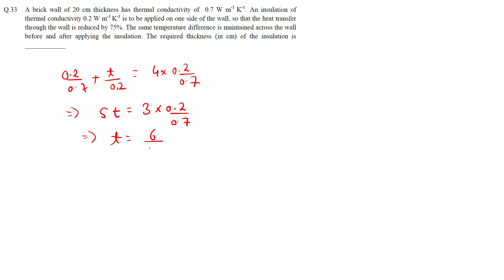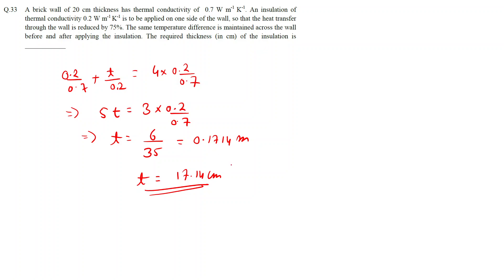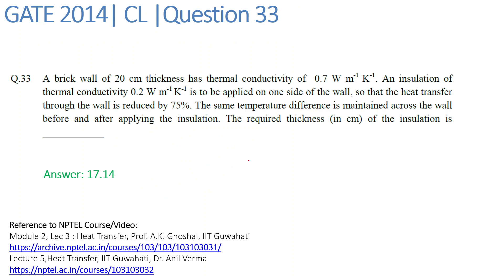Solving: thickness equals 6 upon 35, which is approximately 0.1714 meters. Converting to centimeters, the required thickness of insulation is 17.14 centimeters. The final answer is 17.14 centimeters.